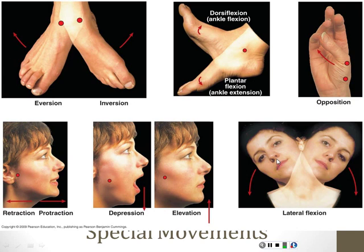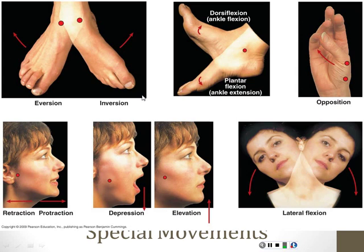These actions are also important, even though not all parts of the body can do them. Eversion and inversion we really talk about with the ankle, though you can also do that with the wrist. The foot motions: dorsi and plantar flexion, opposition — what makes us different from a lot of primates. Then all the motions of the jaw: retraction, protraction, depression, elevation. Incidentally, these motions are also things the scapula can do — describing those scapular motions, we often use these same words.